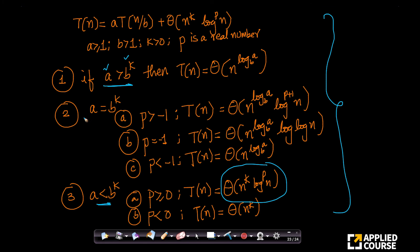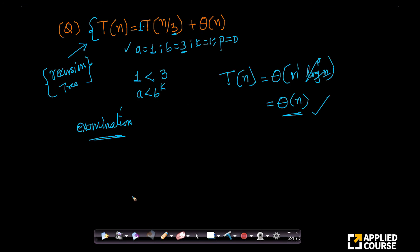And based on in the case of 2, whether p is equal to minus 1, greater than minus 1 or less than minus 1. In the case of 3, it is basically 0 or greater than equal to 0 or less than 0. Very simple case.